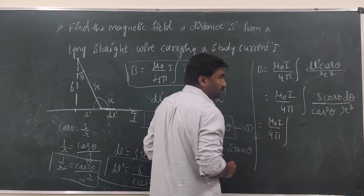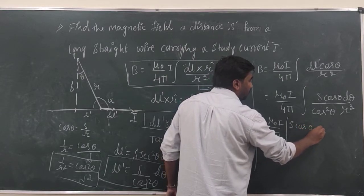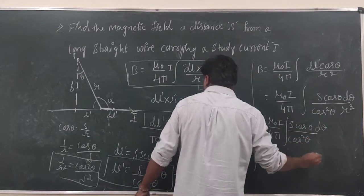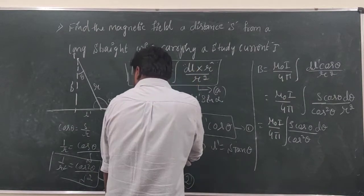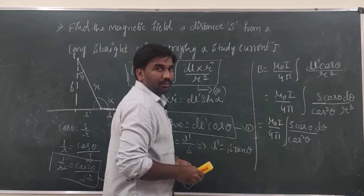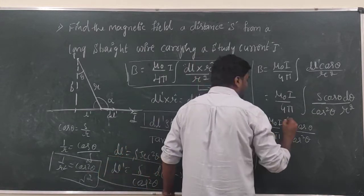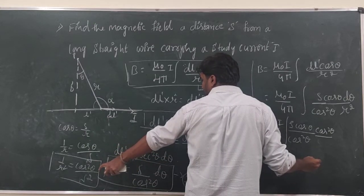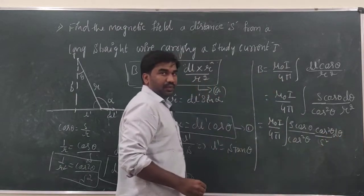Substituting 1/r² = cos²θ/s² into the integral gives: B = (μ₀i/4π) · ∫ (s·cos θ·dθ / cos²θ) · (cos²θ/s²). The cos²θ terms and s terms simplify.